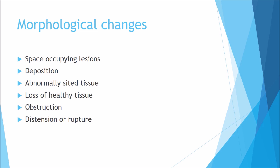Morphological changes include space-occupying lesions — for example, cancer can form a mass taking up unusual space in the body, causing compression on surrounding structures. Deposition is where unwanted chemicals, crystals or material are where they shouldn't be — for example, in atherosclerosis, fatty deposits around the arterial lumen can impede blood flow. Abnormally sited tissue includes metastases of cancer, causing widespread growth. Loss of healthy tissue can result from a graze or damage to the lumen of an artery. Obstruction is the blockage of a pathway — for example in asthma, the airways become obstructed. Distension and rupture is where blockage of flow causes vessels to burst, leading to internal haemorrhaging.